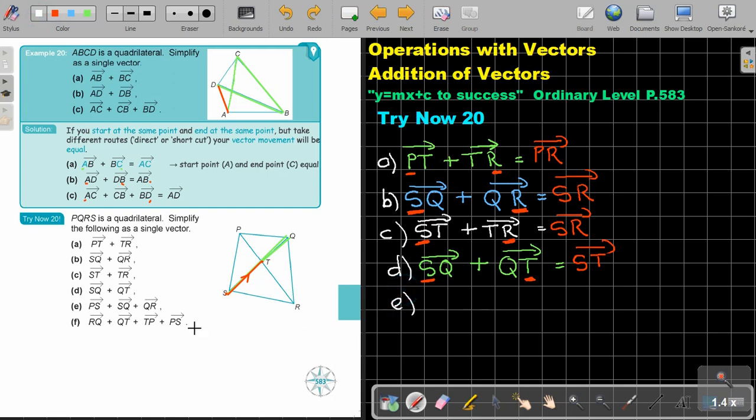The next one, number E. Number E will be PS plus SQ plus QR. It's from the beginning till the end, so it's PR.